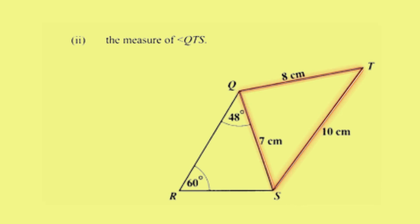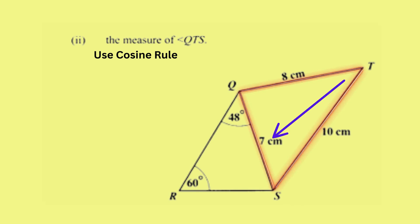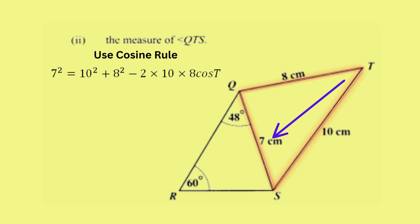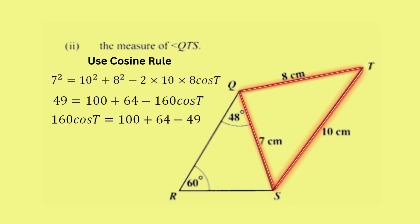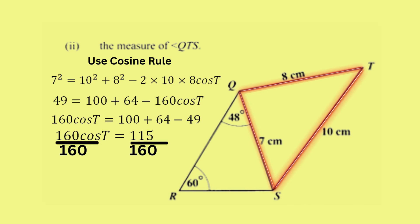To find angle T, we shift focus to triangle QTS. Since we do not know an angle and its corresponding opposite side, the sine rule cannot help, so we use the cosine rule. We begin with the side opposite to angle T, which is 7: seven squared equals the sum of the squares of the other two sides, minus two times those sides, 10 and 8, times cosine T. That gives 49 equals 100 plus 64 minus 160 cosine T. Transposing, 160 cosine T equals 115, so cosine T equals 0.719.